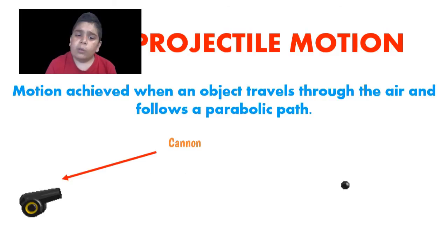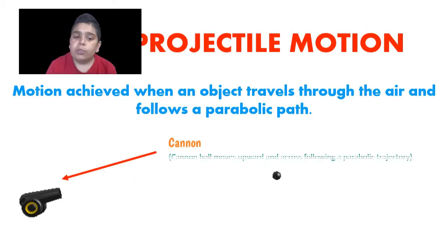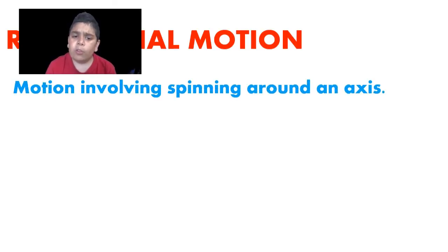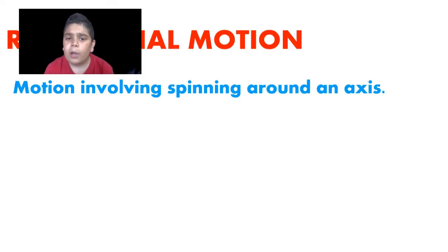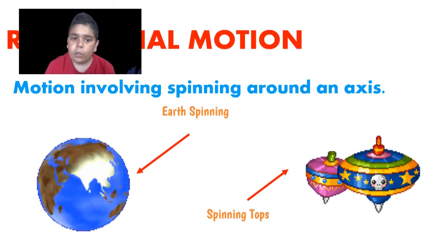And finally, the last type of motion we'll examine in season one is rotational motion. Rotational motion, as you may have guessed, is motion where an object spins around an axis — or in other words, rotates — such as the earth or spinning tops. However, for the purposes of part one of the season, we'll only be looking at motion along a straight line. So what is part one about? Making a motion diagram.